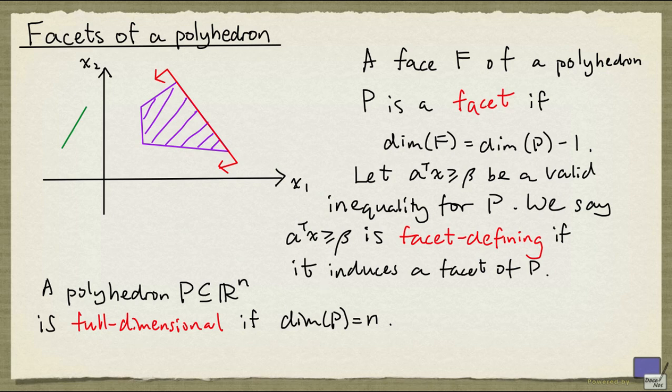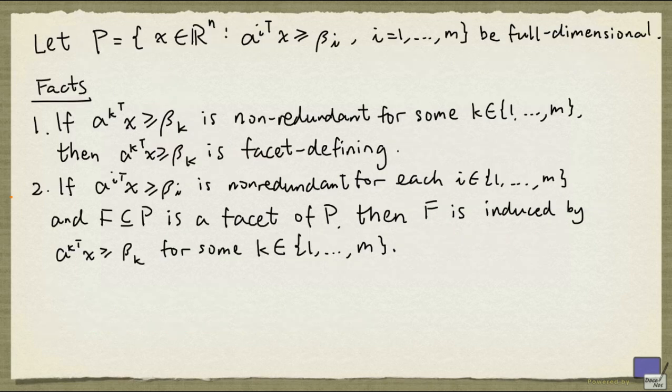So there are a couple of nice facts about full-dimensional polyhedra. Suppose that P is a full-dimensional polyhedron given in this form. Now if one of these inequalities is non-redundant, in other words, removing the inequality will no longer define P, then this inequality is actually facet-defining.